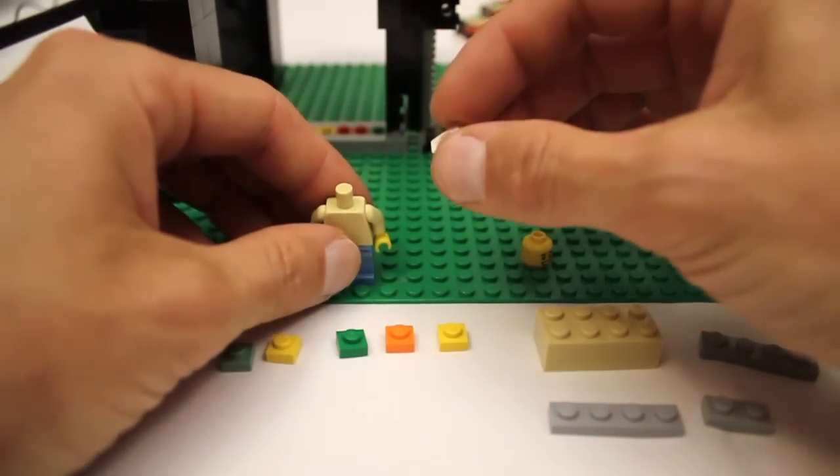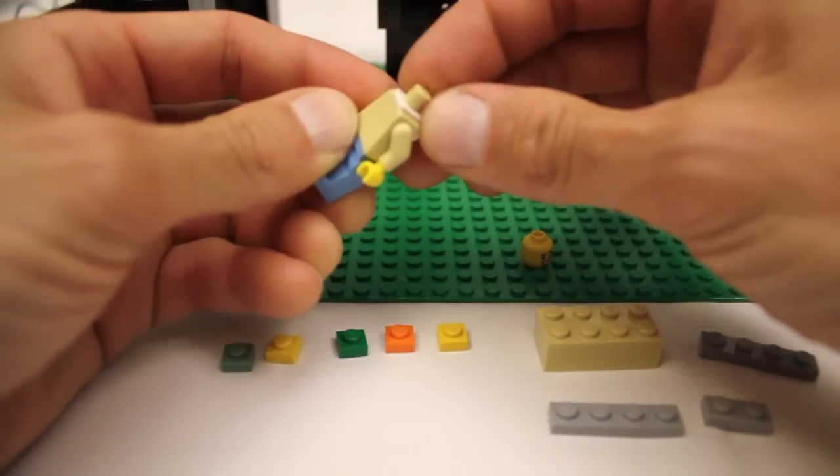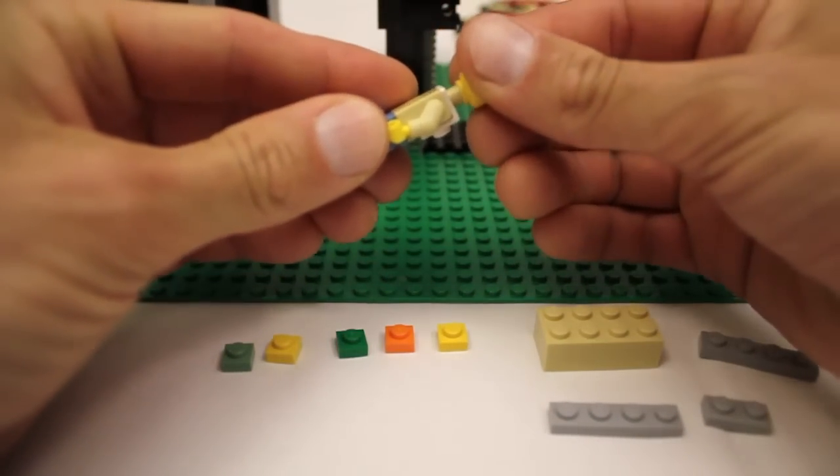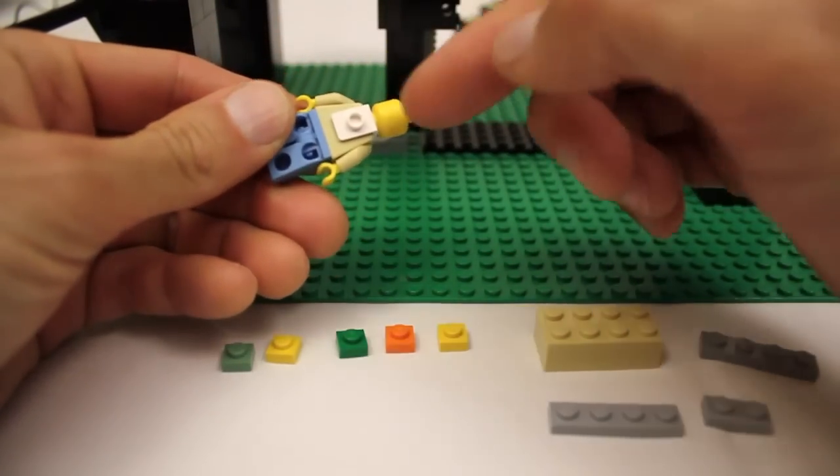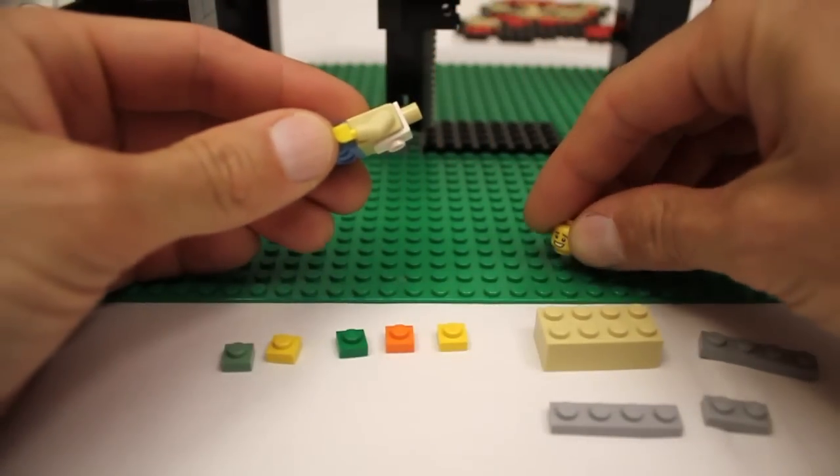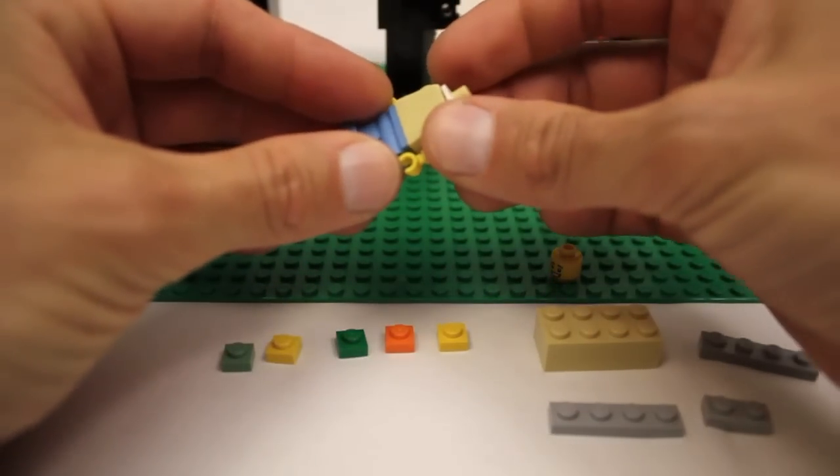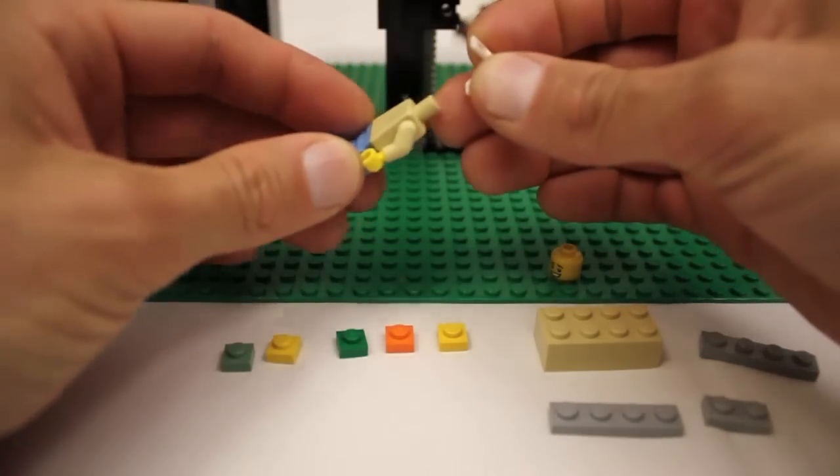It's used to attach things to the back of a minifig like so. There's a stud on the back there, and what really caught my eye about this is the part that slides over the minifig's head.